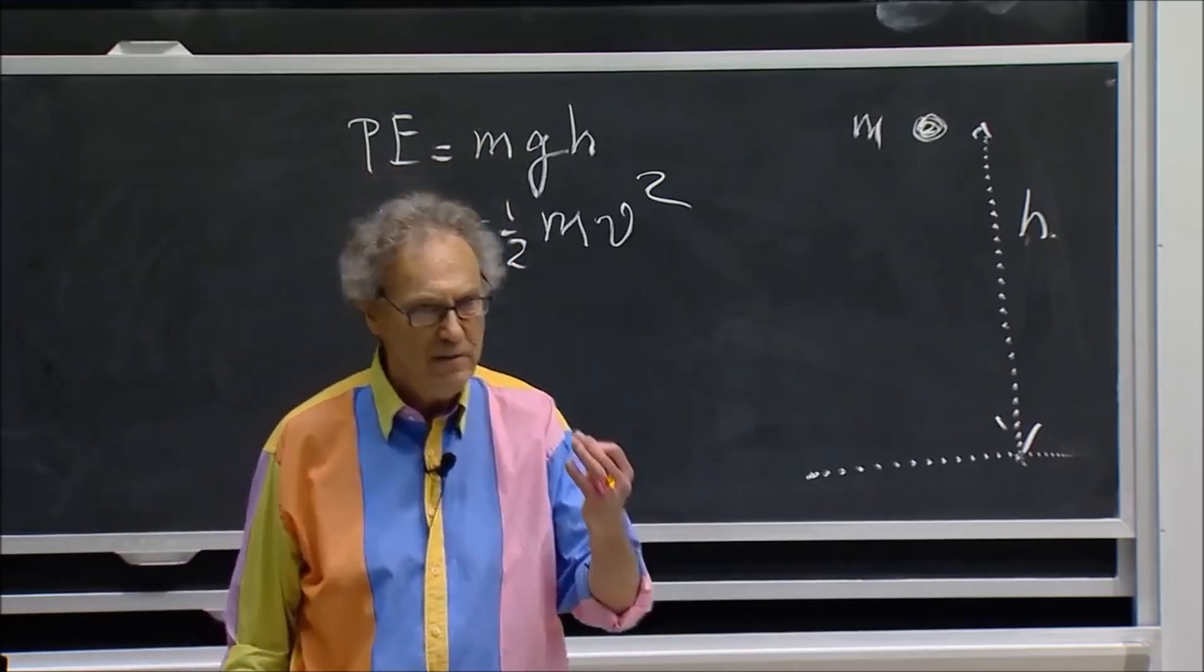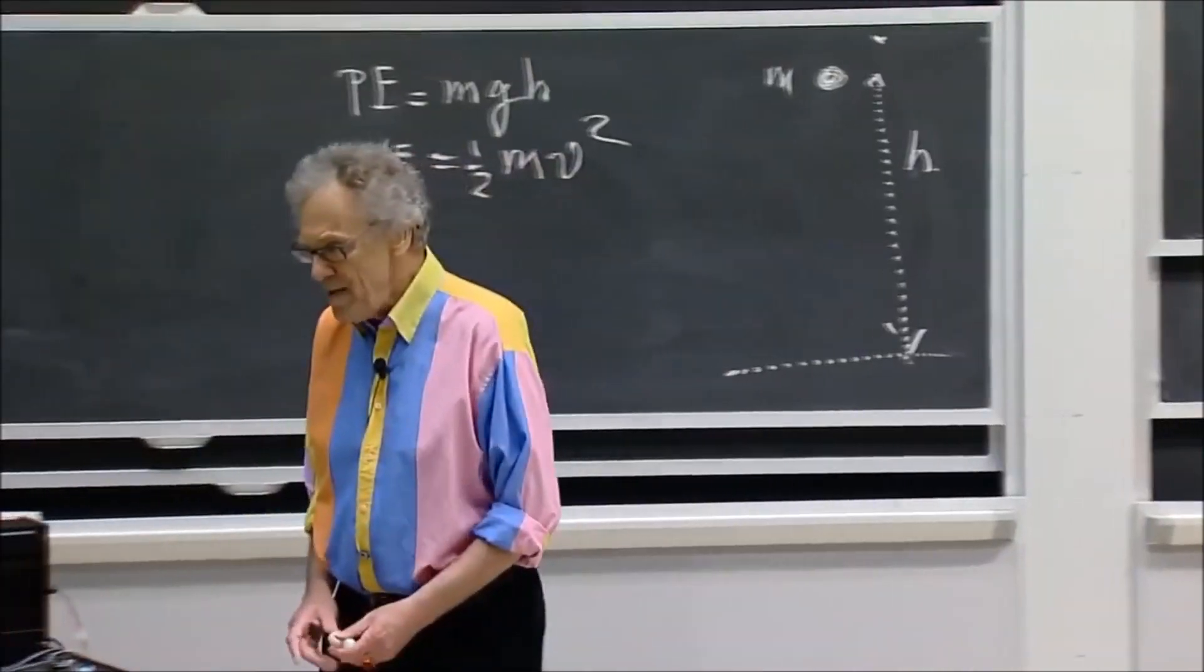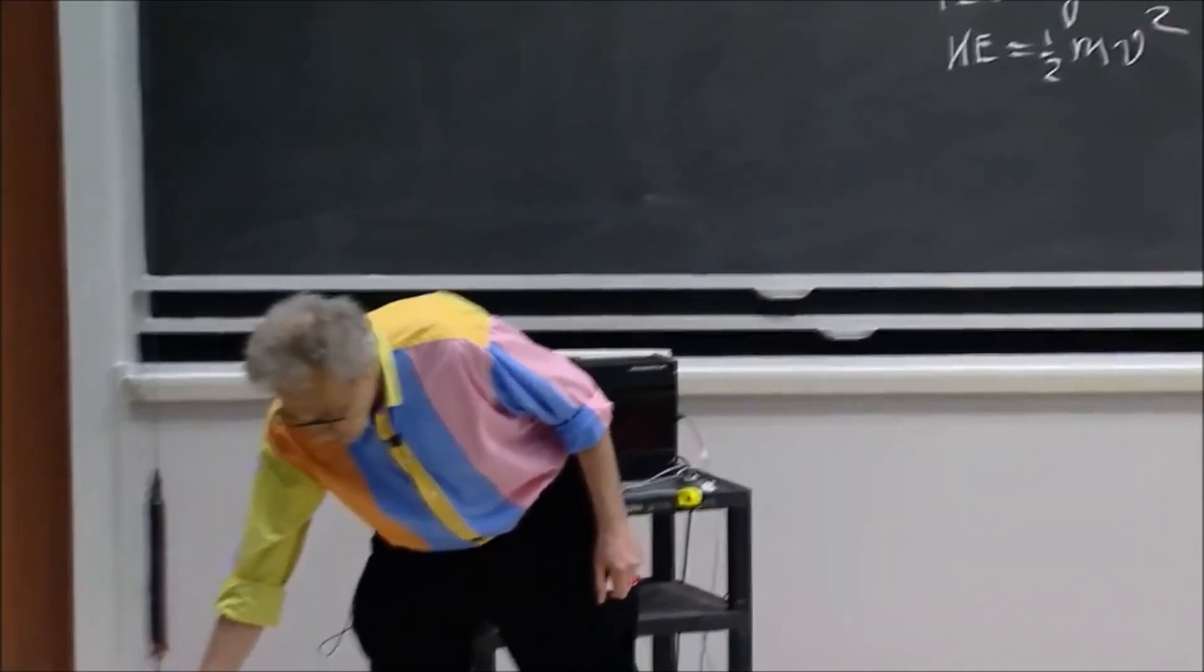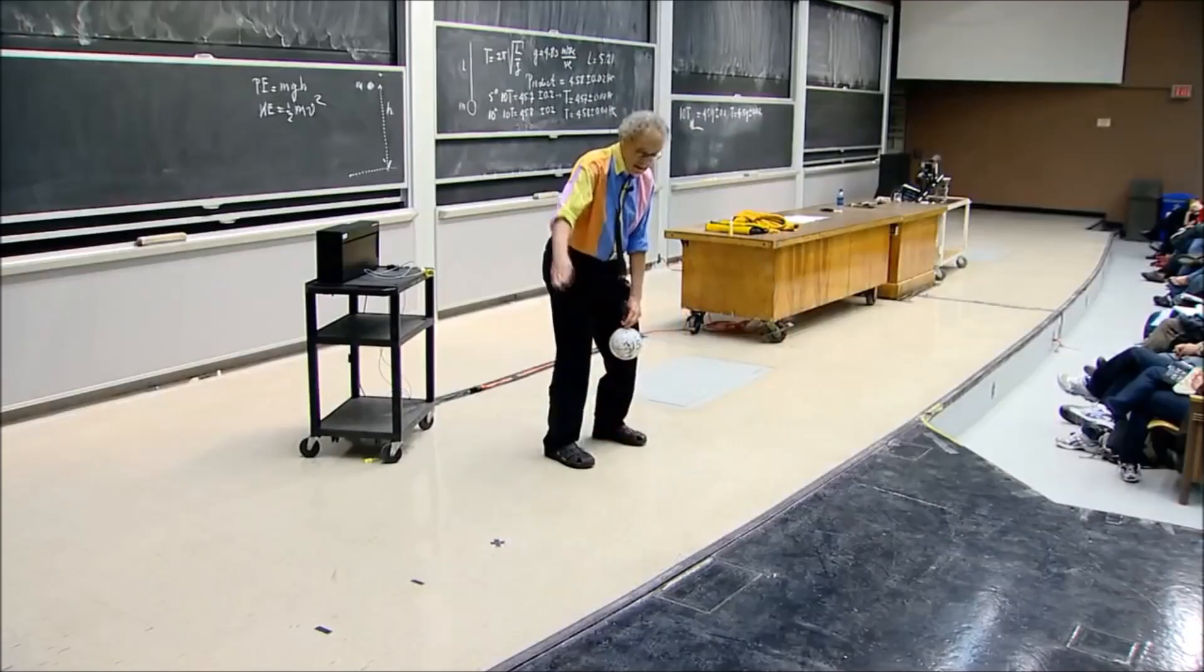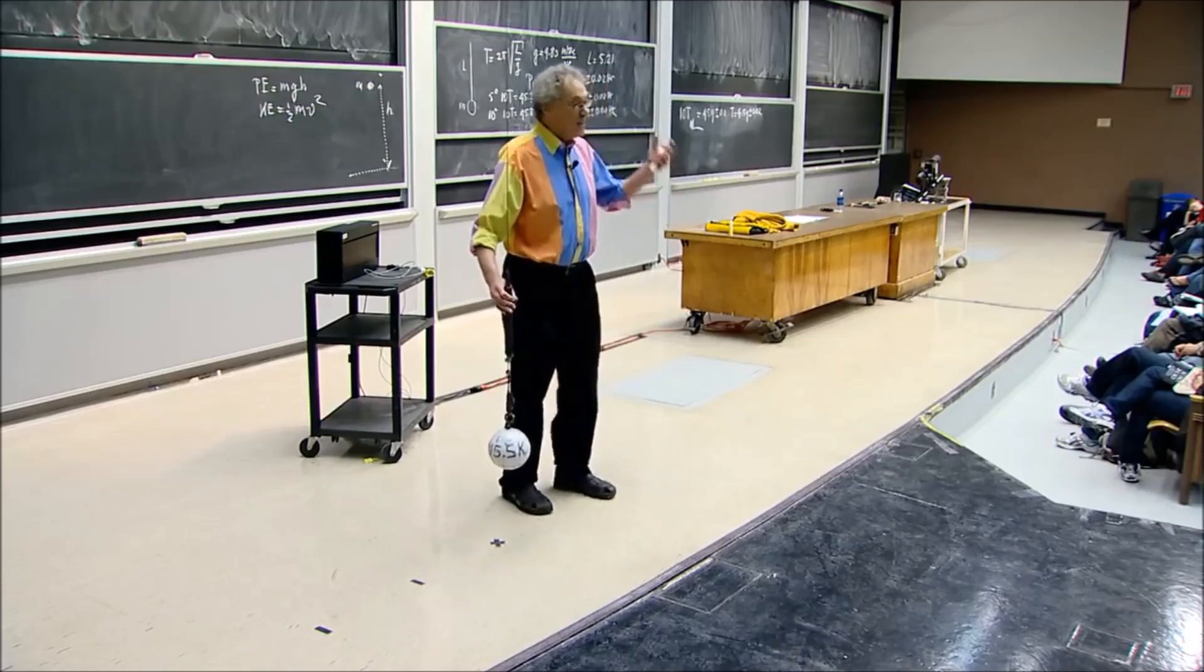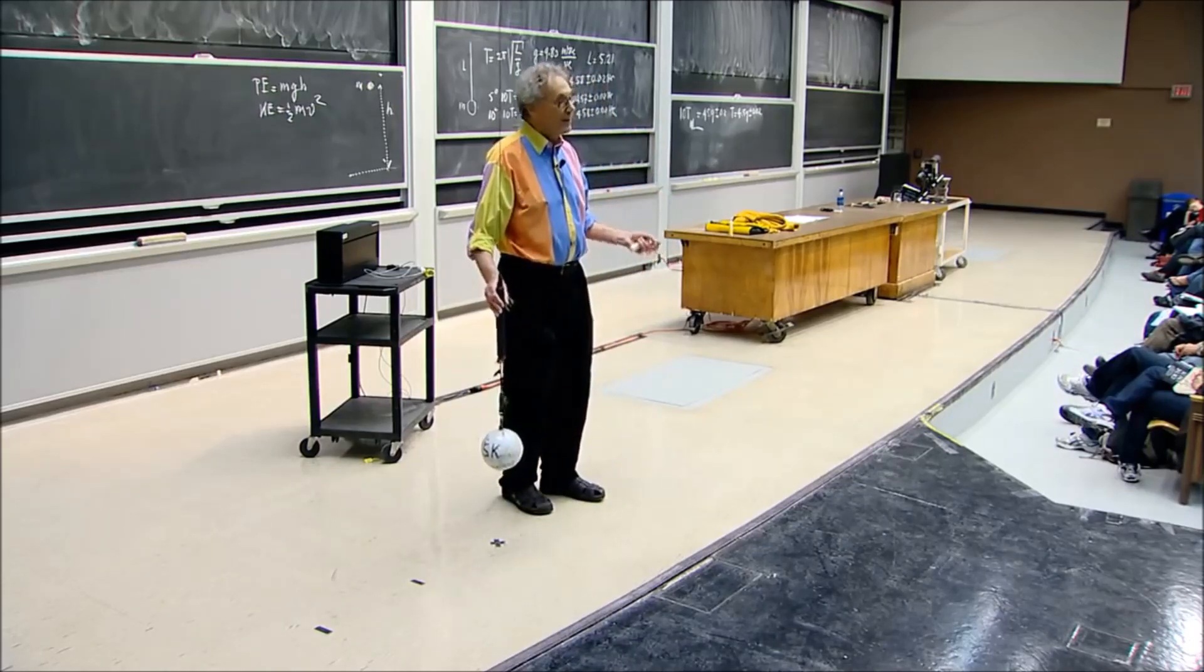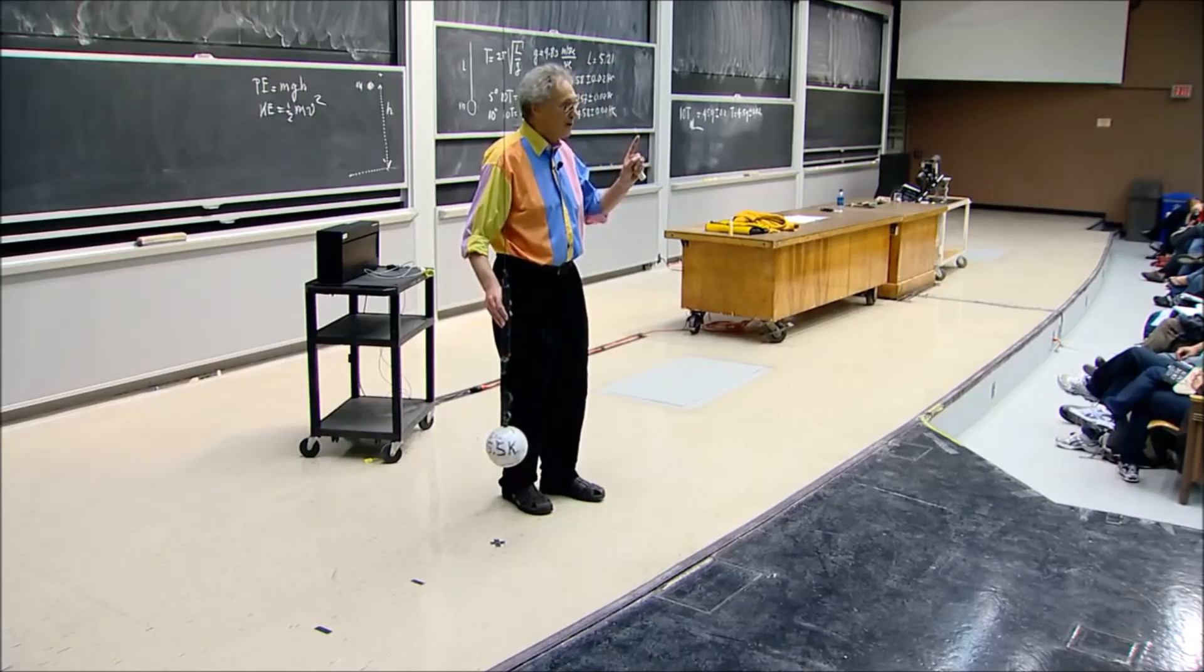Because energy, we believe, is conserved. So if you bring a pendulum at a certain distance above the ground, like this, and you let it swing, when it comes back here, it is almost exactly at that same height. Cannot be higher. That would be a violation of the conservation of energy.